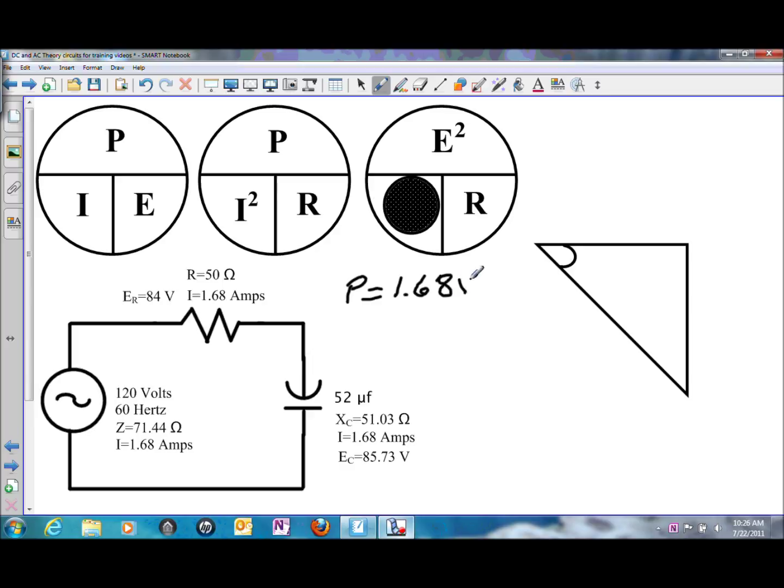So 1.68 amps times 50 ohms of resistance will give us a wattage of 141.12 watts.